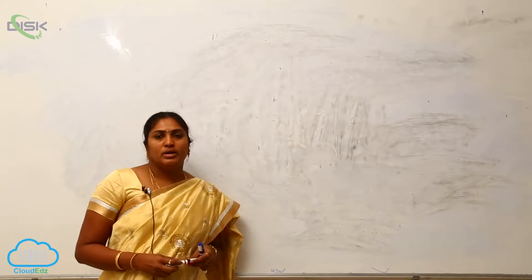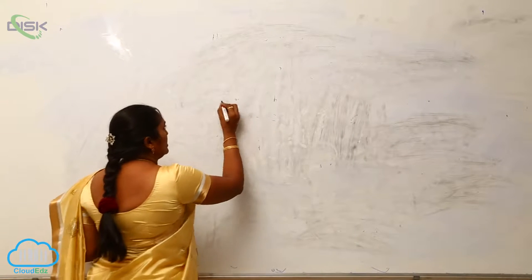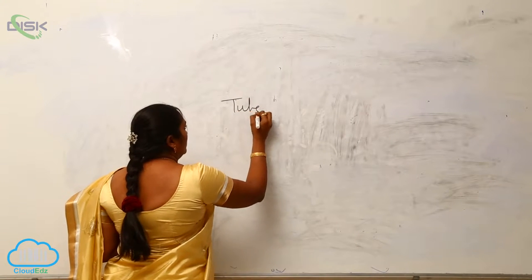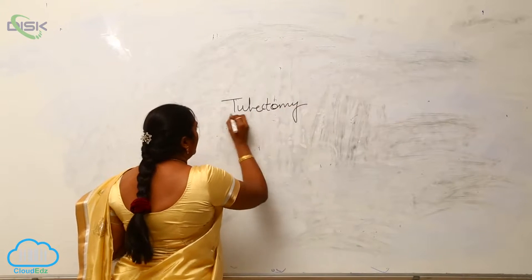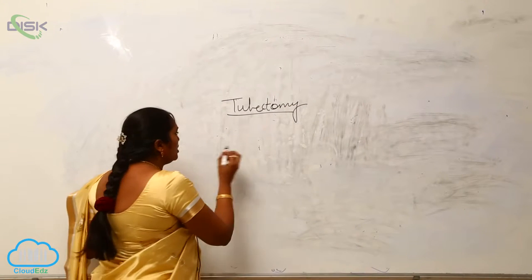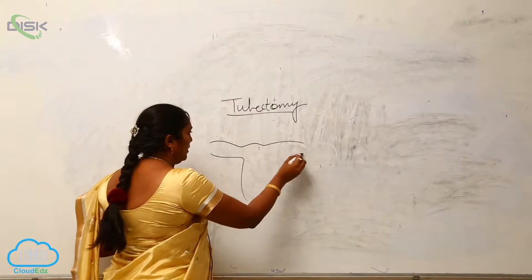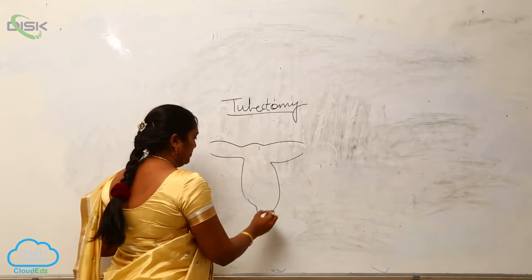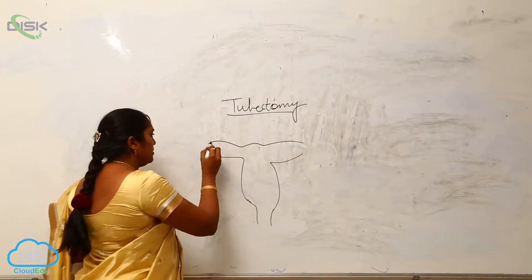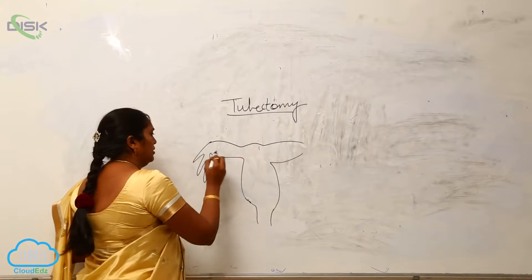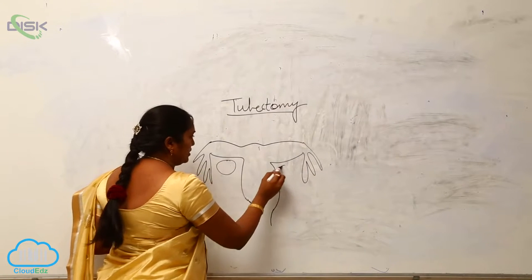We have seen the process of vasectomy. Now what is a tubectomy? Tubectomy is seen in females. This is the female reproductive system with the ovaries.